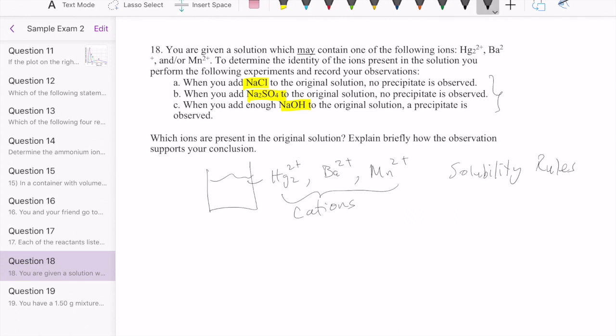So let's do that. First, we're adding NaCl. NaCl would break apart into Na⁺ and Cl⁻. It's a soluble salt. In solubility rules, chloride is always soluble except when it's paired up with three ions. Mercury 1 is one of them, lead, and silver. It tells us that when we add NaCl, we don't see any precipitate. It means that mercury must not be present in our solution.